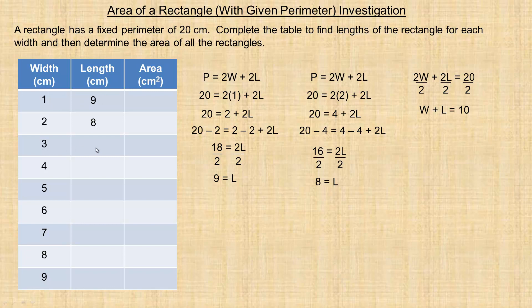So the width and length add to 10. So 1 and 9 add to 10, 2 and 8 add to 10. If this is 3, then this would have to be a 7, because 3 and 7 add to 10. If this is 4, this would have to be 6 for the length, because 4 and 6 add to 10. If the width is 5, then the length is 5. And so if this is 6, that would have to be 4; 7 and 3; 8 and 2; 9 and 1. Notice all the pairs of widths and lengths add to 10.